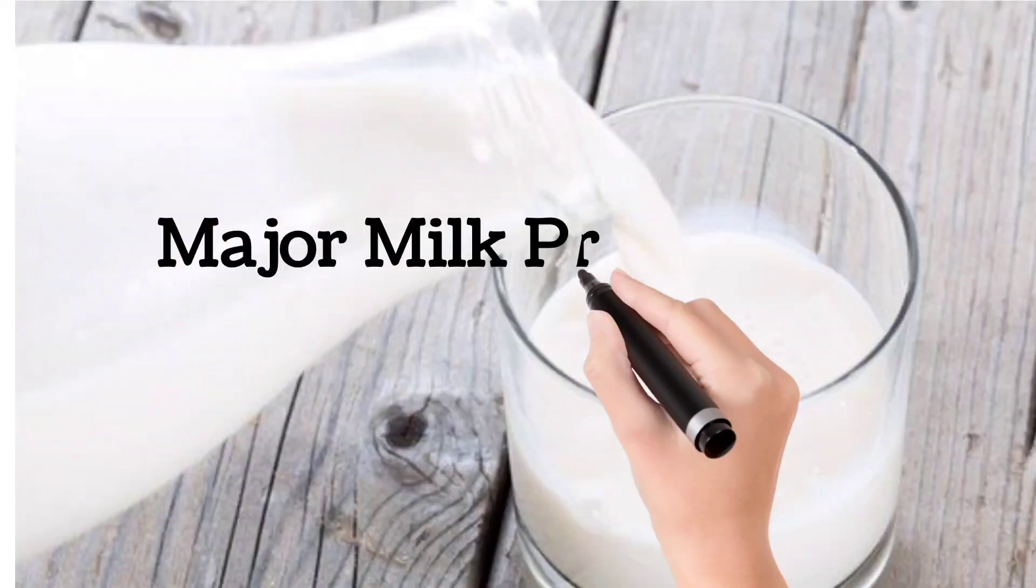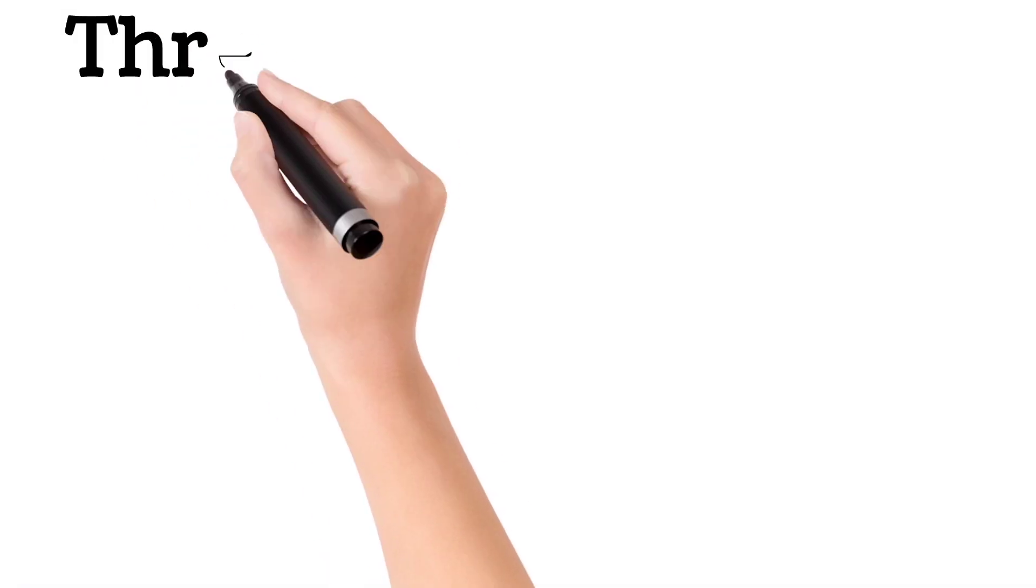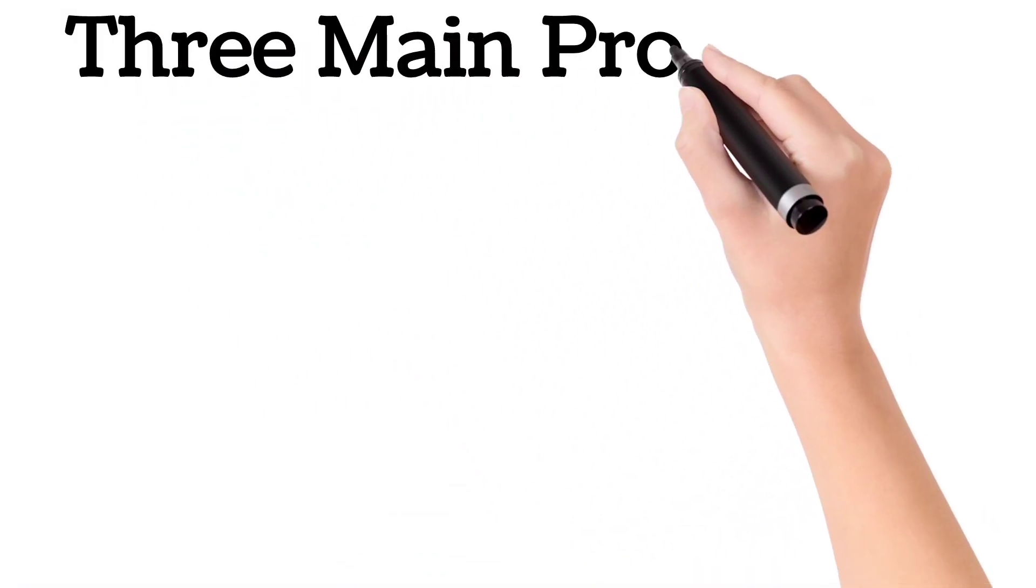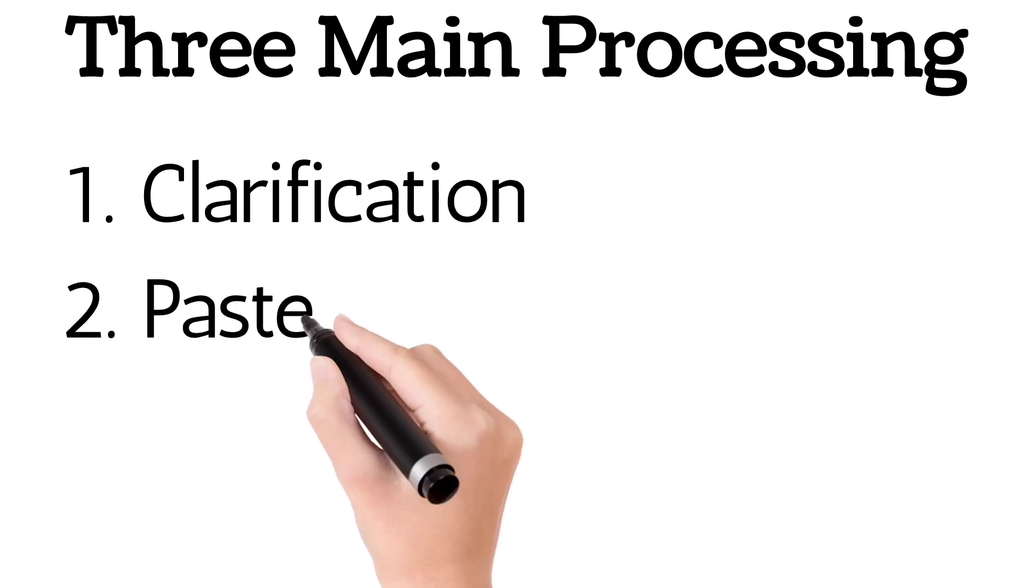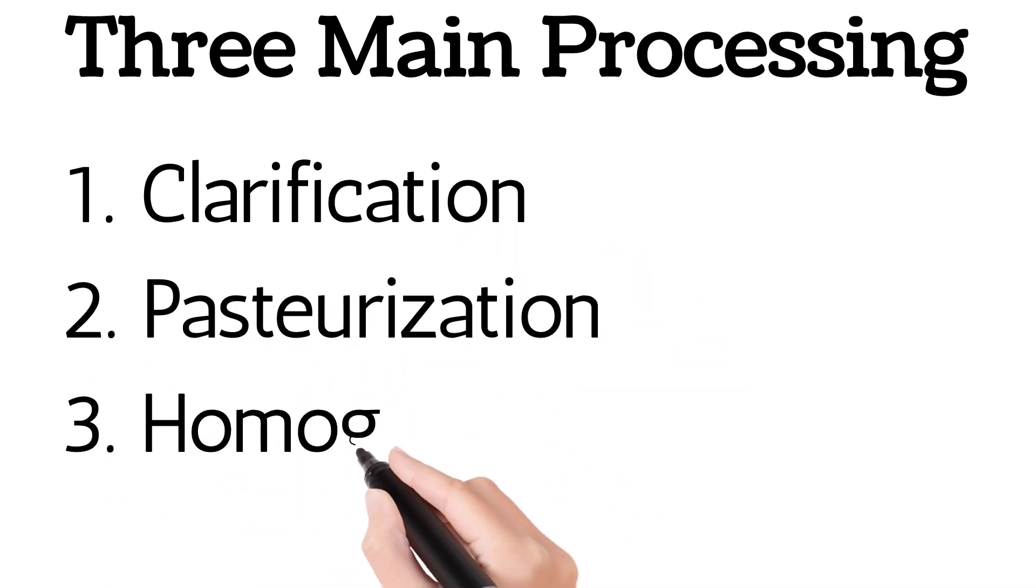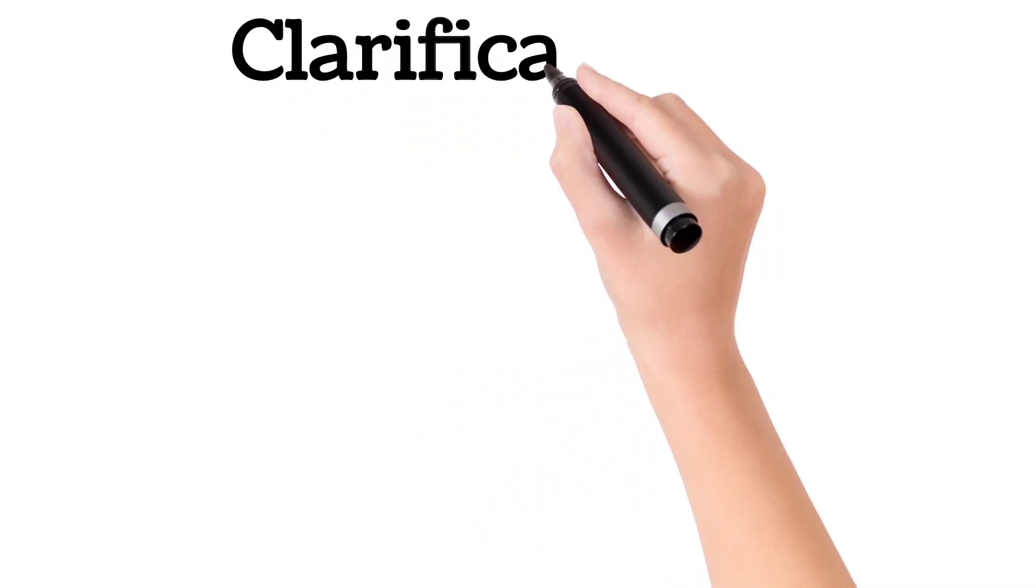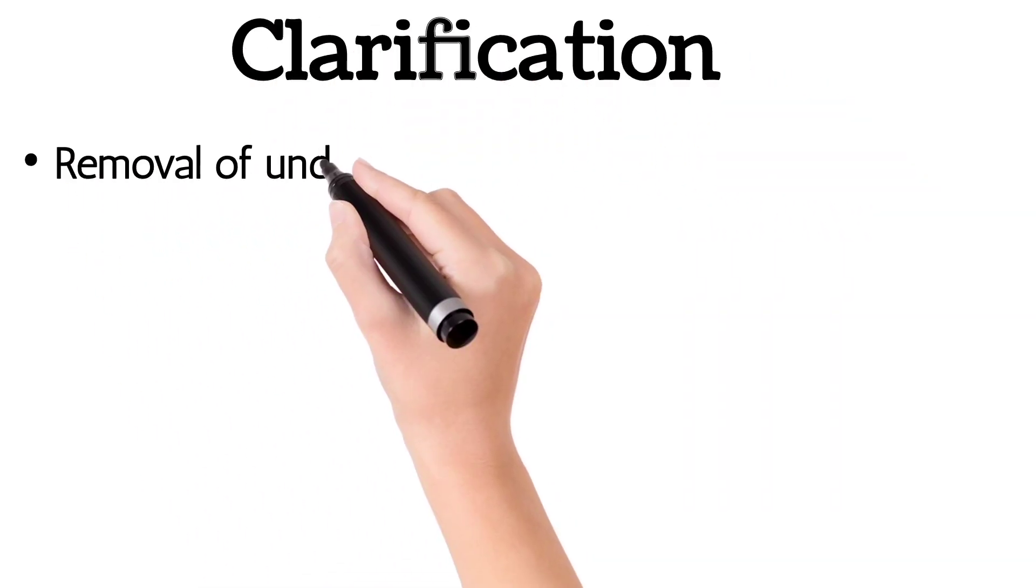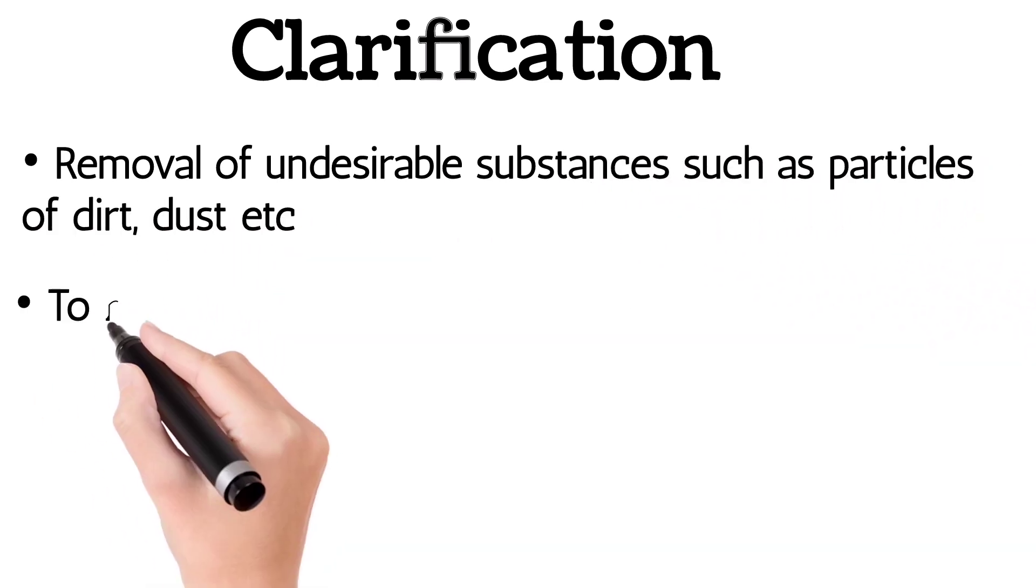Major milk processing operations include three main processes: clarification, pasteurization, and homogenization. Clarification is the removal of undesirable substances such as particles of dust.